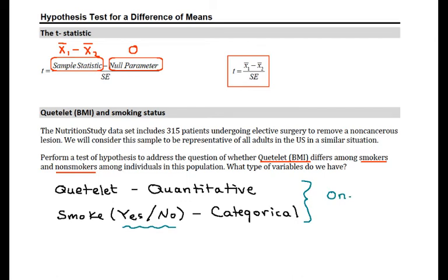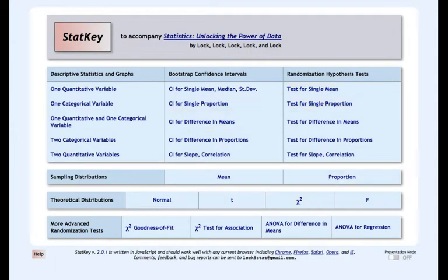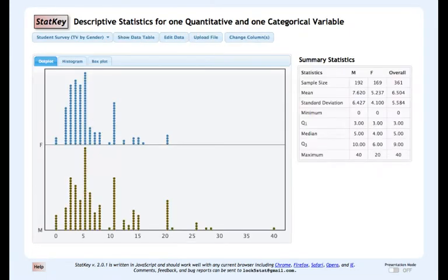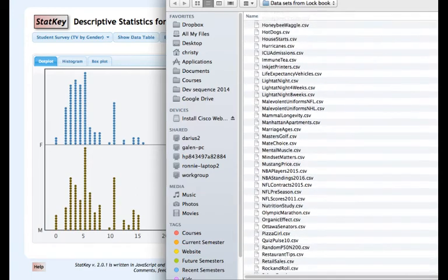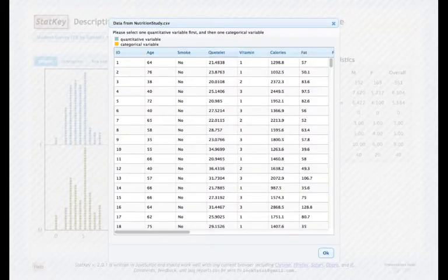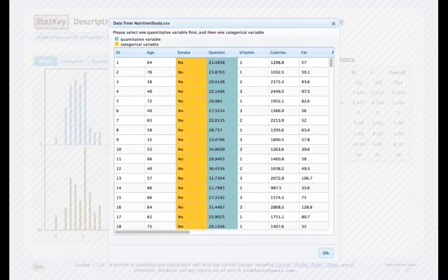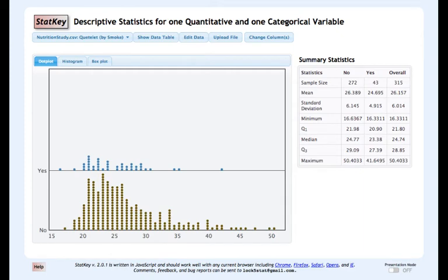So we need to go to descriptive statistics for one quantitative and one categorical variable in StatKey. Let's go ahead and open that nutrition study data set. Here in StatKey, under descriptive statistics and graphs, I'm going to one quantitative and one categorical variable. I'm going to upload file. I'm going to sort these by name and scroll down to the ends to find nutritionstudy.csv. Quetelet is my quantitative variable. Smoke is my categorical variable.